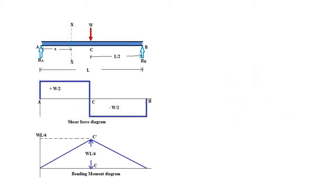To start, I will consider a simply supported beam where an external load has been applied. Due to this external load, if you consider any particular section, you will get some shear force and bending moment. If you plot the shear force at each section, you get a shear force diagram, and similarly plotting the bending moment gives you a bending moment diagram.